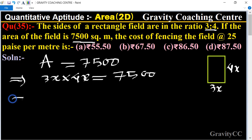That implies x² equals 7500 divided by 3 into 4. So canceling, 7500 divided by 12 equals 625.